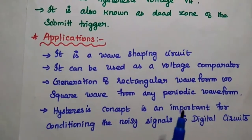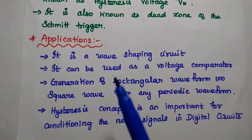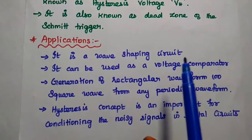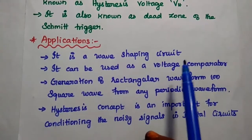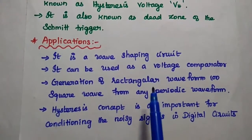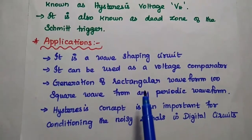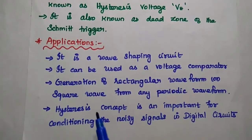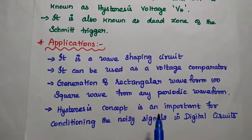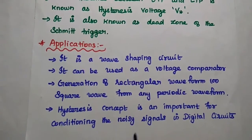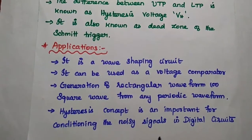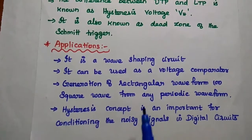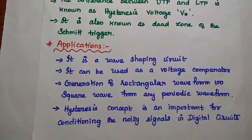The applications of the Schmitt Trigger: it is a wave shaping circuit mainly used to generate a square waveform from any periodic waveform. It can also be used as a voltage comparator. The hysteresis concept is very important for eliminating noise signals in a digital circuit. These are the major applications of the Schmitt Trigger.